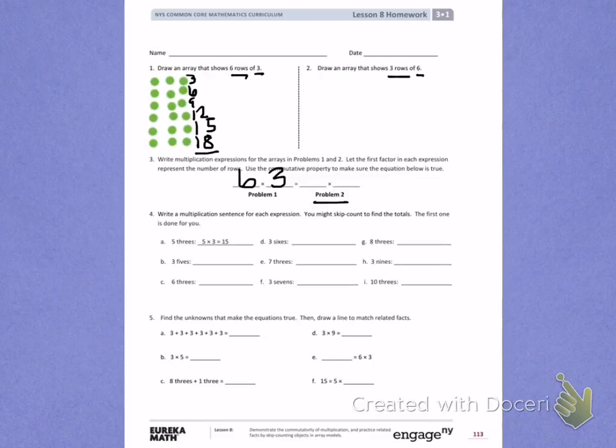Number 4. Write a multiplication sentence for each expression. You might skip count to find the totals. The first one is done for you.